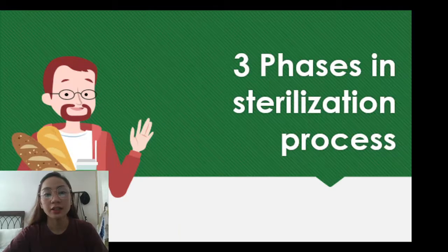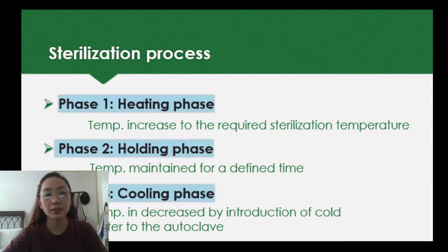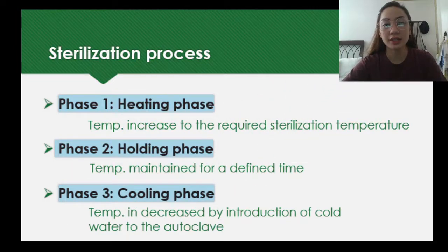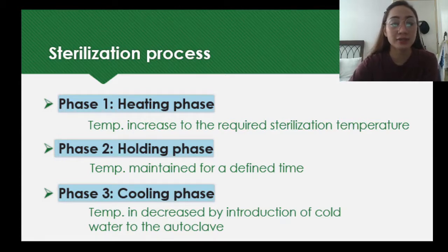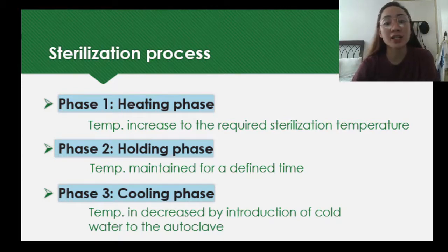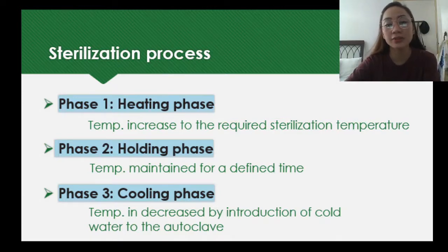There are three phases in the sterilization process. Phase one is the heating phase, where there is an increase in temperature to the required sterilization temperature — sometimes there is also a preheating phase before it reaches the required temperature. The temperature may be 110, 121, or even higher, depending on the food item and the volume being sterilized.